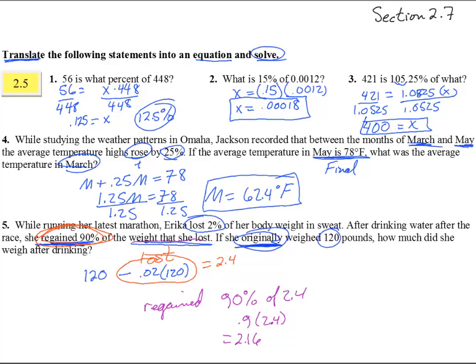So she lost 2.4. She regained 2.16. So we're going to take and put that on the end, plus that 2.16. So overall, 120 minus 2.4 plus 2.6, that gives us 119.76 pounds is how much she weighs now. Okay, good.